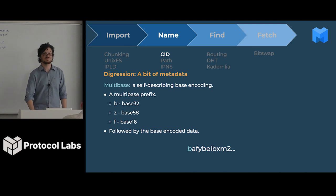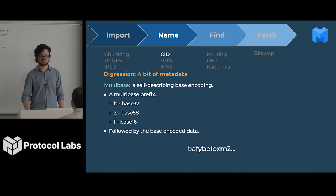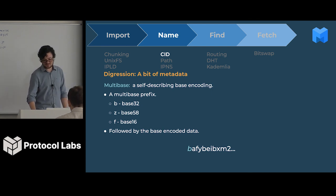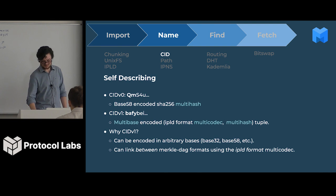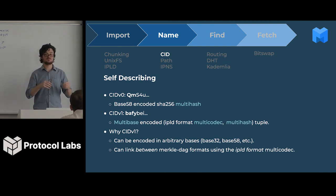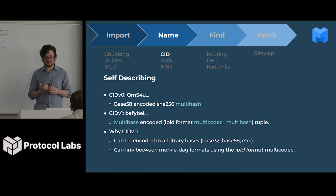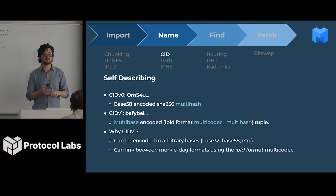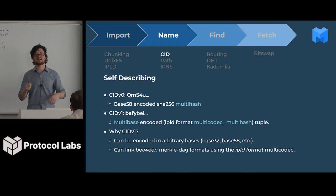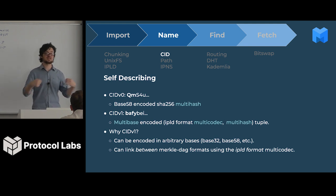There's a bit of metadata in CIDs — this is Multiformats. Remember how I said a CID is a hash plus a bit of metadata? We have two types of CIDs: CIDv0 and CIDv1. CIDv0 is the old format we actually use most frequently at the moment. CIDv1 is the new format with even more metadata, because we realized we didn't have enough in CIDv0. CIDv0 is essentially a multihash.